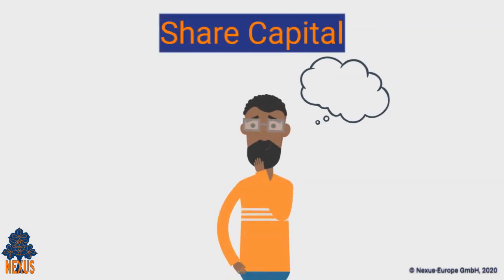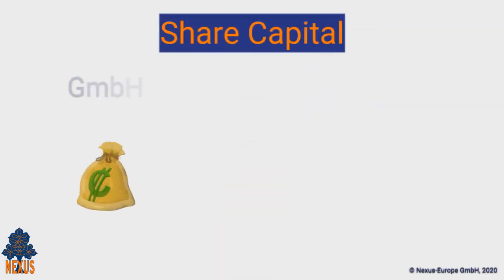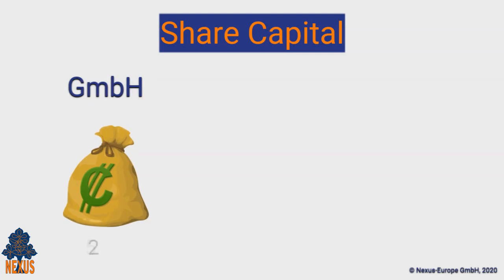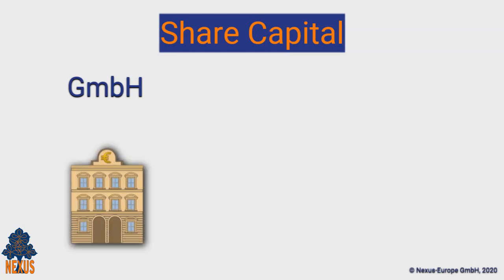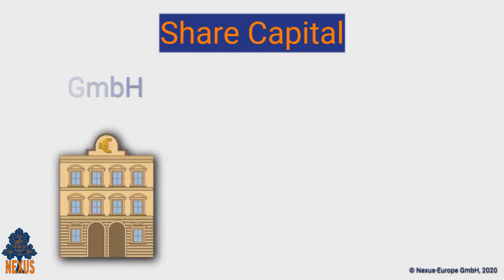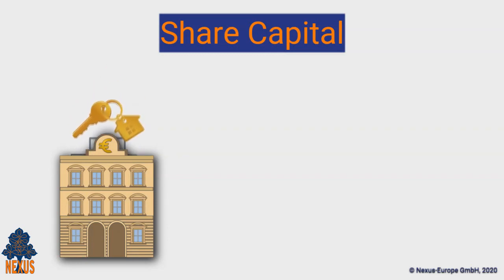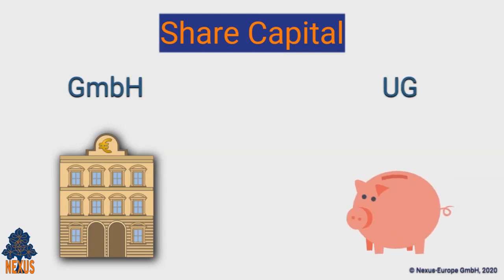What share capital do I need to start a company? The minimum amount of share capital required for a GmbH is 25,000 euros. For a GmbH registration, it is enough to deposit half of that amount — 12,500 euros. The contribution in share capital of a GmbH can be made in cash or in kind — equipment, property, or other assets. The minimum amount of share capital required for a UG is 1 euro.